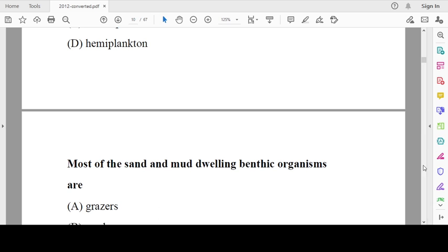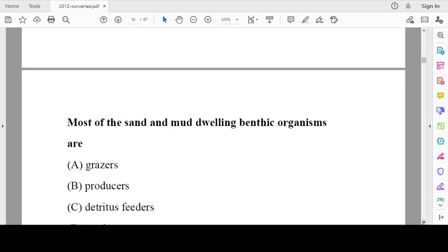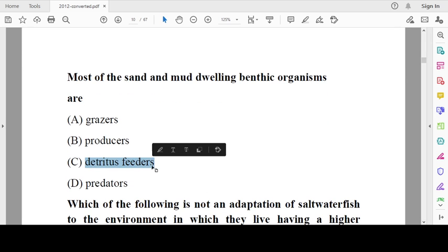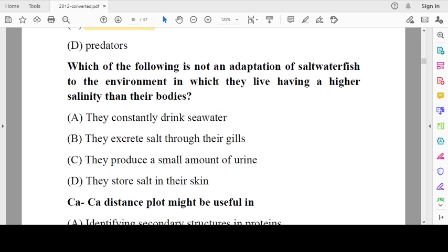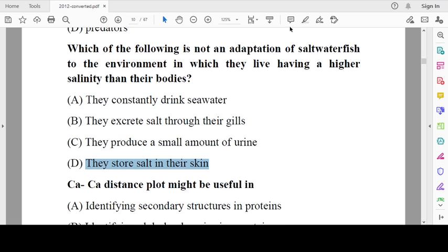Most of the sand and mud-dwelling benthic organisms are detritus feeders. These things you studied in school itself, just revise. Which of the following is not an adaptation of saltwater fish to the environment having higher salinity than their bodies? They constantly drink saltwater, yes. They excrete salt through their gills, correct. They produce small amounts of urine, yes. The wrong option is they store salt in the skin. Nowhere did we study that fish can store salt in the skin.